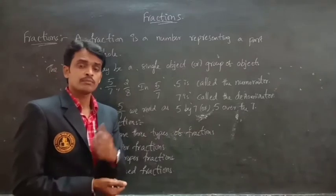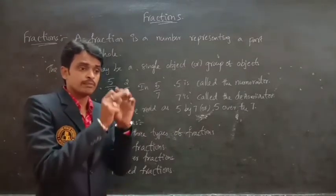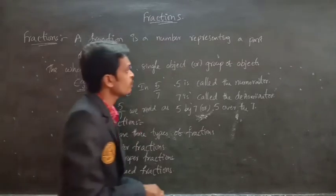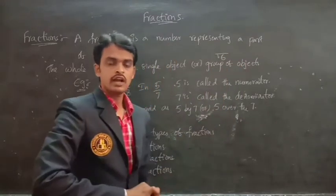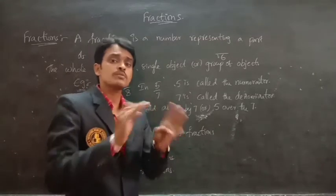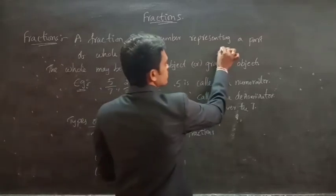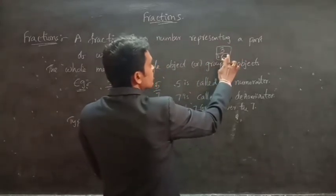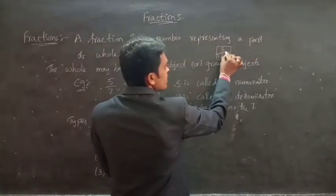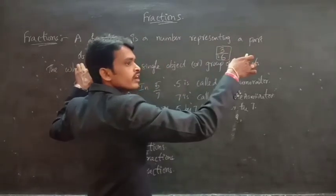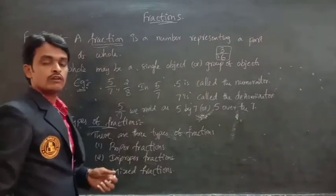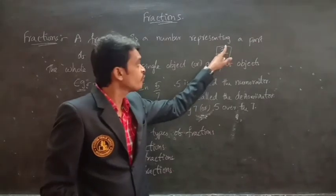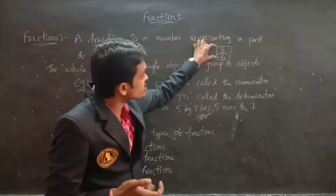Recently we discussed a pizza. The pizza is divided into six parts and we distributed to two brothers. The pizza was divided into totally six parts and distributed between two brothers. Each brother got three parts. So we are representing this as a fraction — a number representing a part of a whole is called a fraction. Fraction is nothing but a part of a whole. The three pieces are represented as three by six. This is called a fraction.